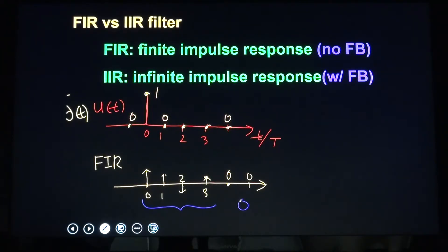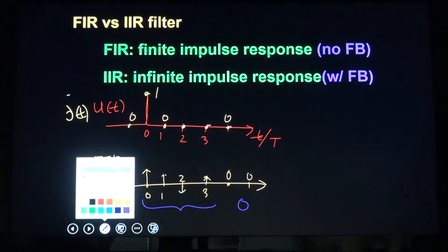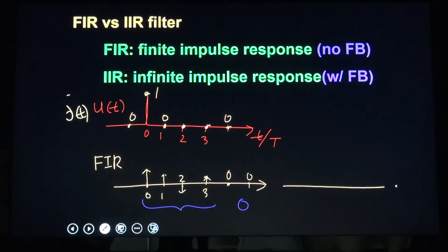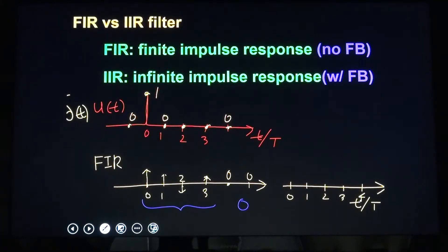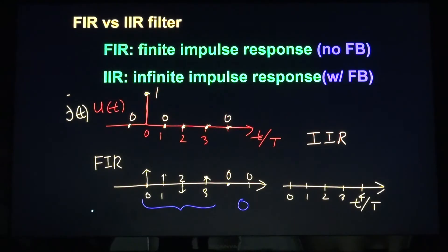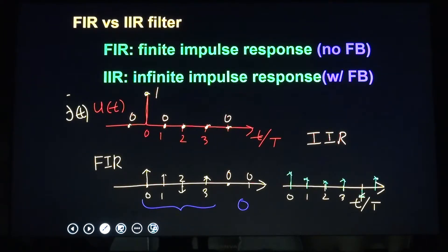For IIR, the impulse response is infinite — it never ends. The output at 1, 2, 3, 4, 5 samples and beyond never goes to zero. That infinite number of nonzero impulse response values is what defines IIR. IIR has a feedback circuitry, whereas FIR does not have any feedback circuitry.